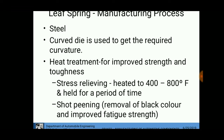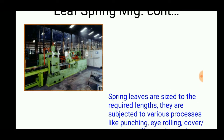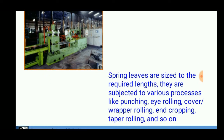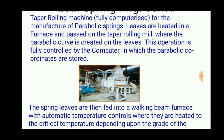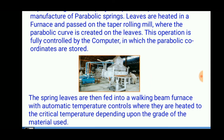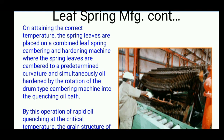The manufactured spring leaves are sized to the required lengths and subjected to various processes such as punching, eye rolling, cover wrapper rolling, and cropping. A taper rolling machine is used to get the correct, accurate parabolic shape so that the leaves achieve the correct curvature and are stacked in the correct format.